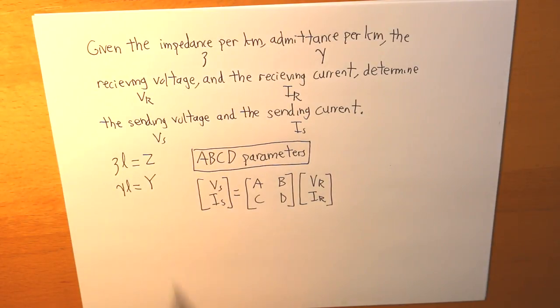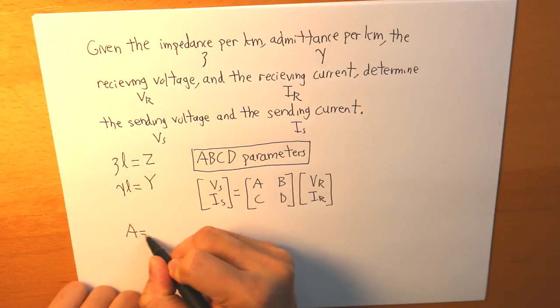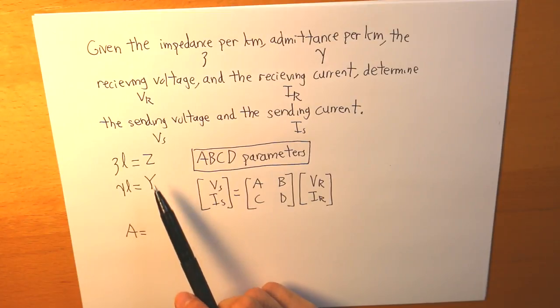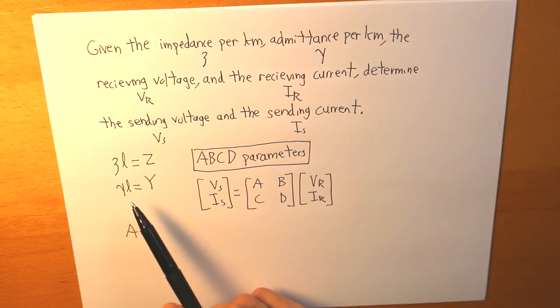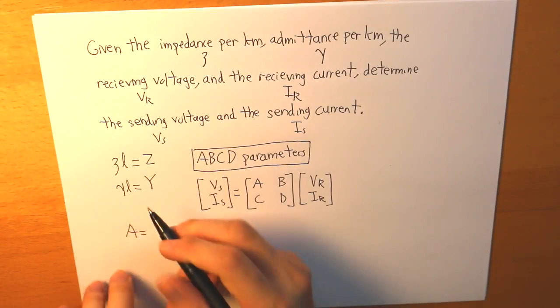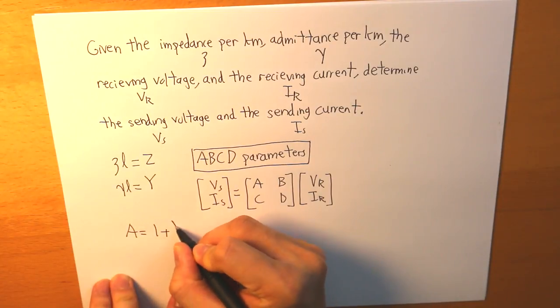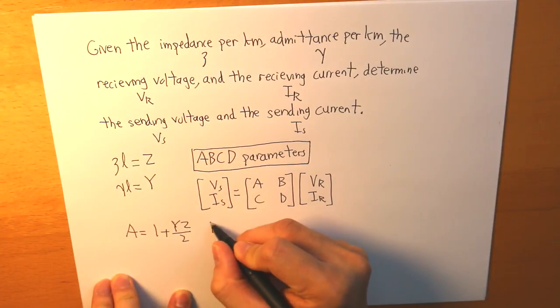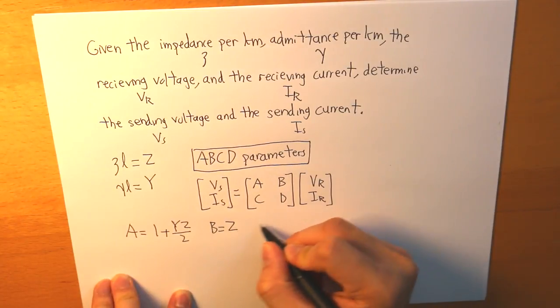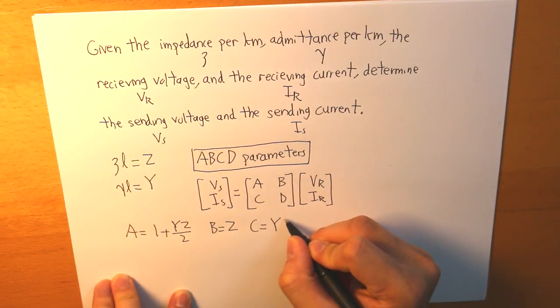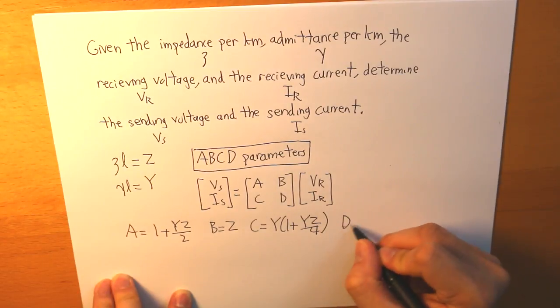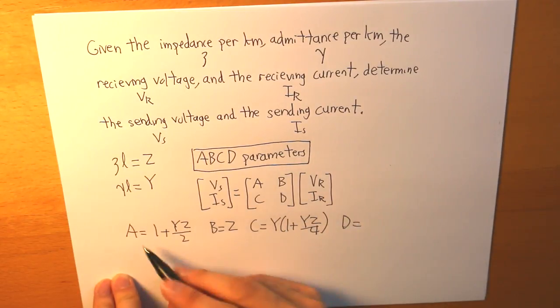Simply put, A is equal to, well, each letter is equal to a combination of the admittance and impedance calculated. So, for A, it's simply 1 plus Y times Z over 2. B is simply equal to Z. C is Y times 1 plus YZ over 4. And finally, D is equal to the same thing as A.